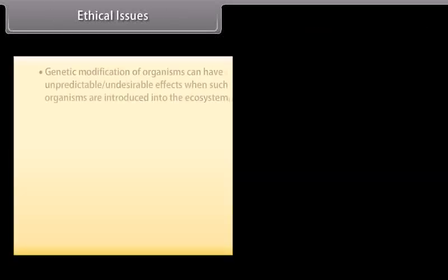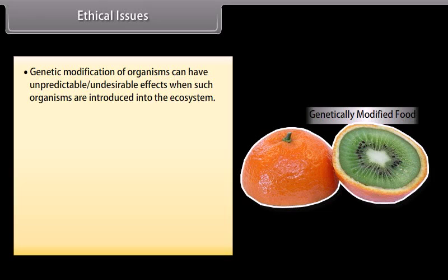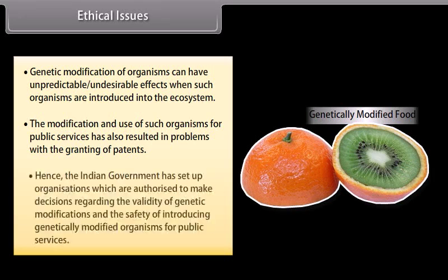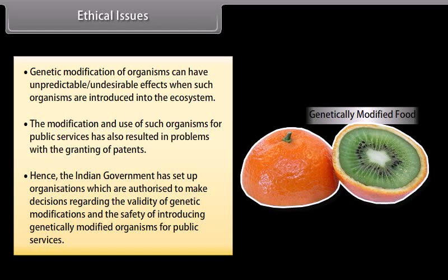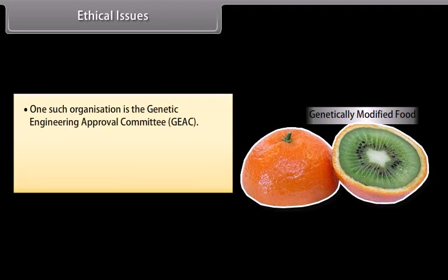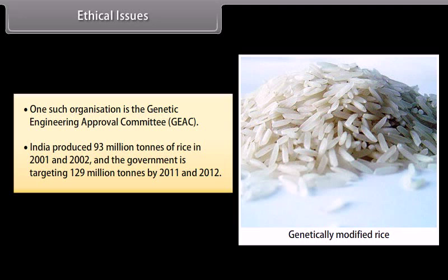Ethical Issues: Genetic modification of organisms can have unpredictable, undesirable effects when such organisms are introduced into the ecosystem. The modification and use of such organisms for public services has also resulted in problems with the granting of patents. Hence, the Indian government has set up organizations authorized to make decisions regarding the validity of genetic modifications and the safety of introducing genetically modified organisms for public services. One such organization is the Genetic Engineering Approval Committee, GEAC. India produced 93 million tons of rice in 2001–2002 and the government targeted 129 million tons by 2011–2012.